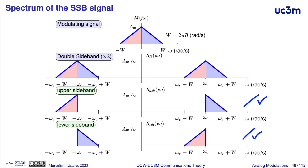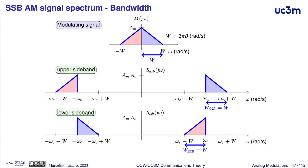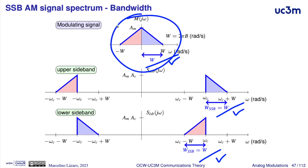Now, considering the bandwidth of these modulated signals, it is straightforward to see that the bandwidth of the upper sideband signal and the bandwidth of the lower sideband signal are both equal to the bandwidth of the modulating signal — in this case, W radians per second.